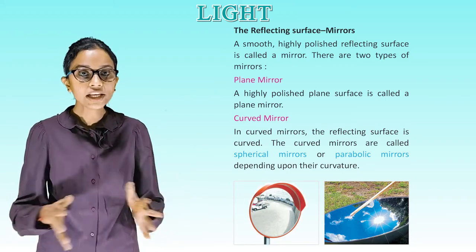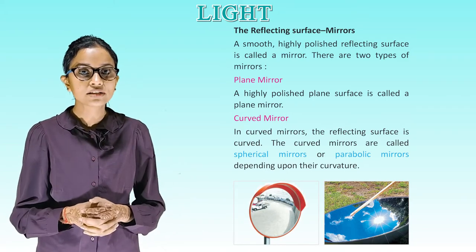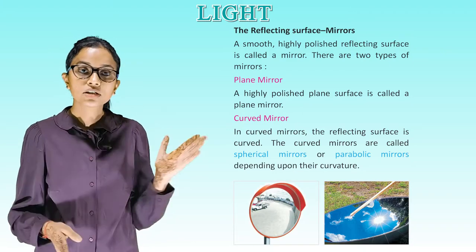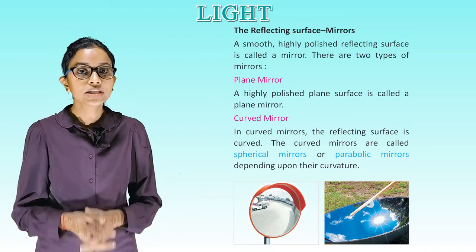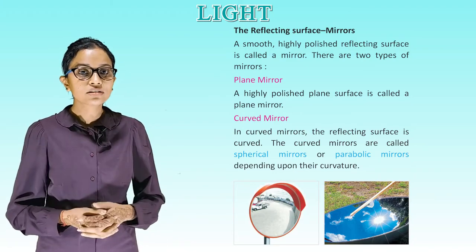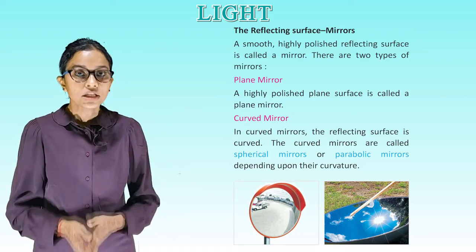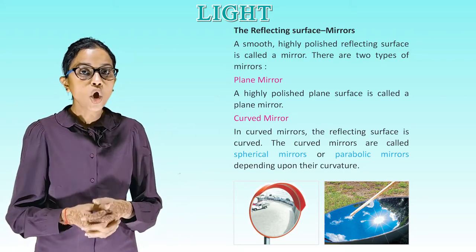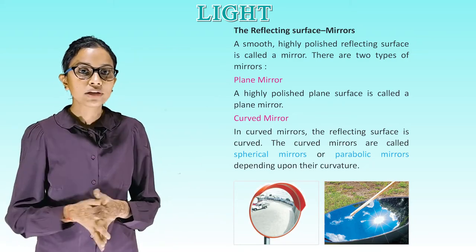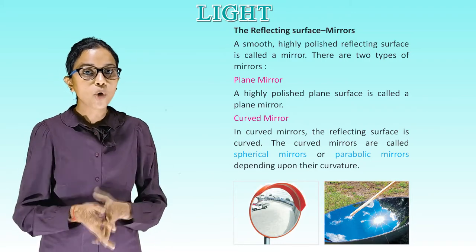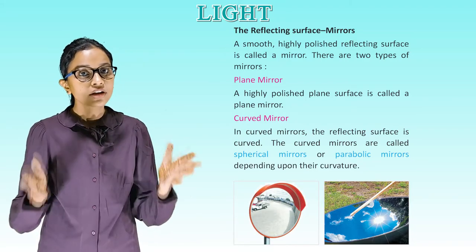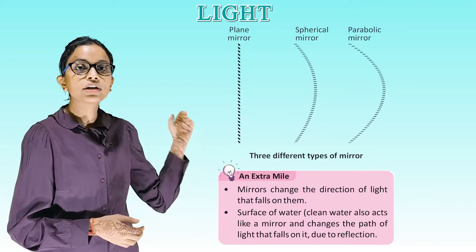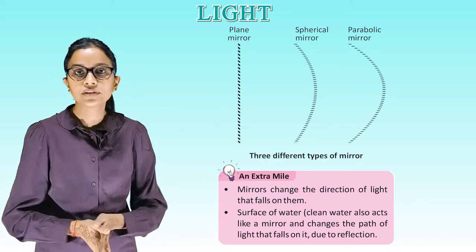There are two types of mirror. Plane mirror: a highly polished plane surface is called a plane mirror. Curved mirror: in curved mirrors the reflecting surface is curved. Curved mirrors are called spherical mirrors or parabolic mirrors depending upon their curvature. Now see the diagram showing the types of mirror.